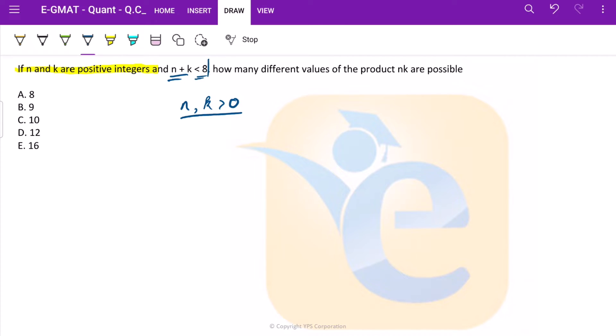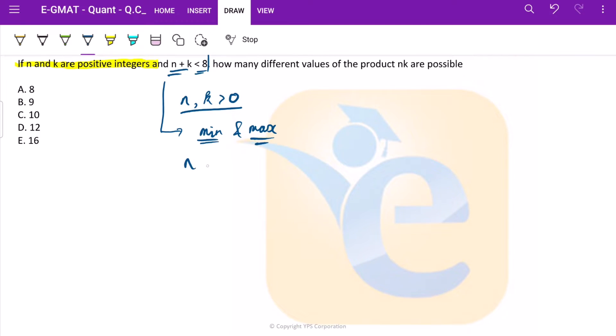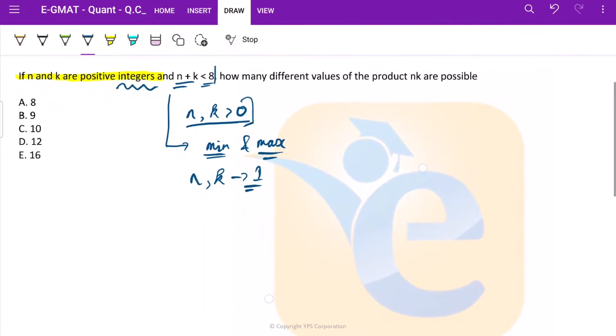A quick inference we should take out from here is what can be the minimum and maximum value for n and k. The minimum value for n and k can be 1 because both are integers and they are greater than 0. That is what we already know.